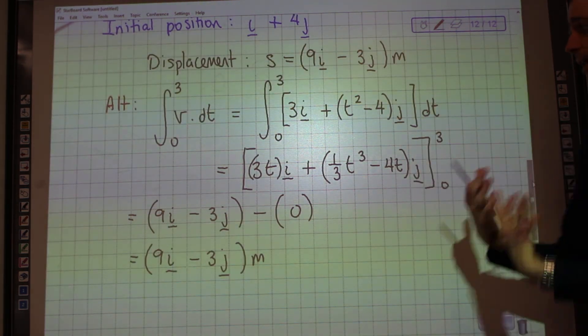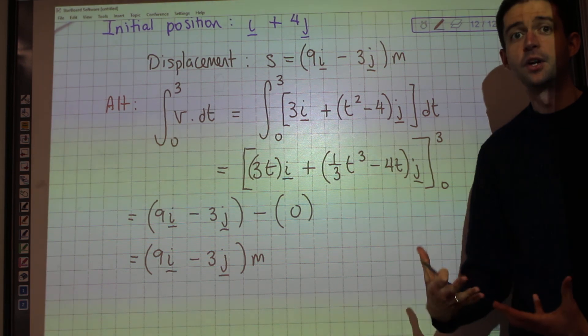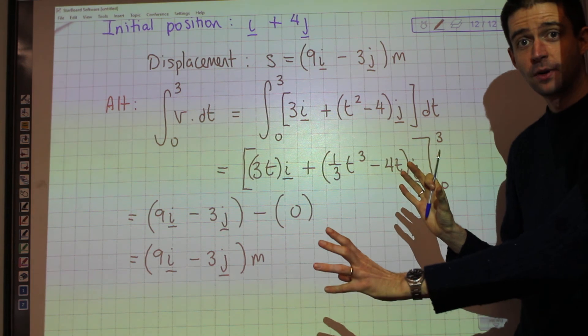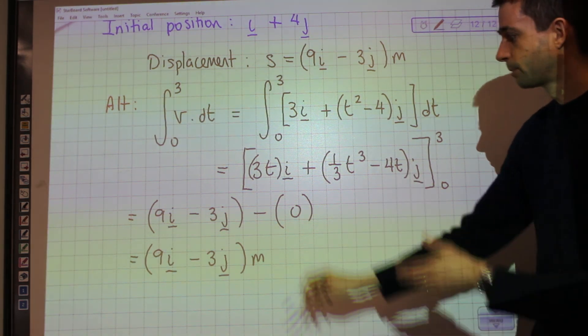do it between the two limits. And the bonus of that is you don't have to find the constants. Because you don't actually care about either position. It's about how far it's travelled, where it's gone. Which is what you've worked out here.